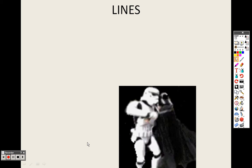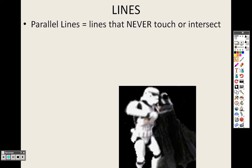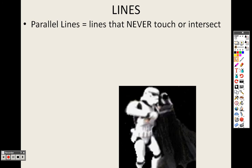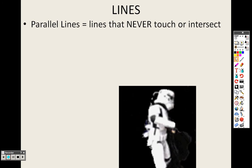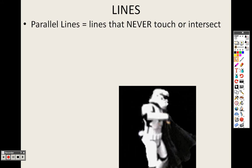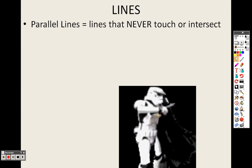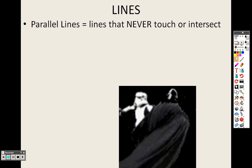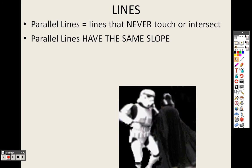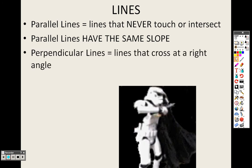Continuing section 2.2 on the slopes of lines, we need to look at parallel lines. Parallel lines are lines that will never touch each other — they keep going on forever and ever and will never cross. What makes them parallel is that they have the same slope. Parallel lines have the same slope; that's how you know they are parallel.